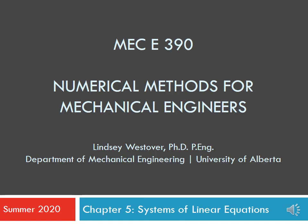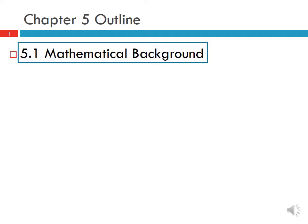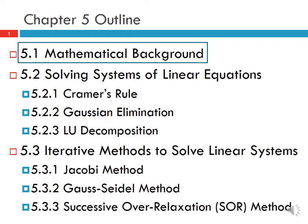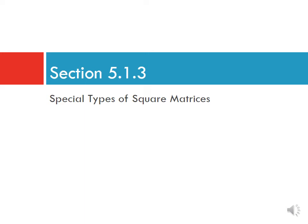In this video we're going to continue our discussion of chapter 5, systems of linear equations. From the last video we covered the mathematical background — matrices as functions between vector spaces, matrix notation, and how systems of linear equations relate to that notation. Now we're going to get into special types of square matrices.